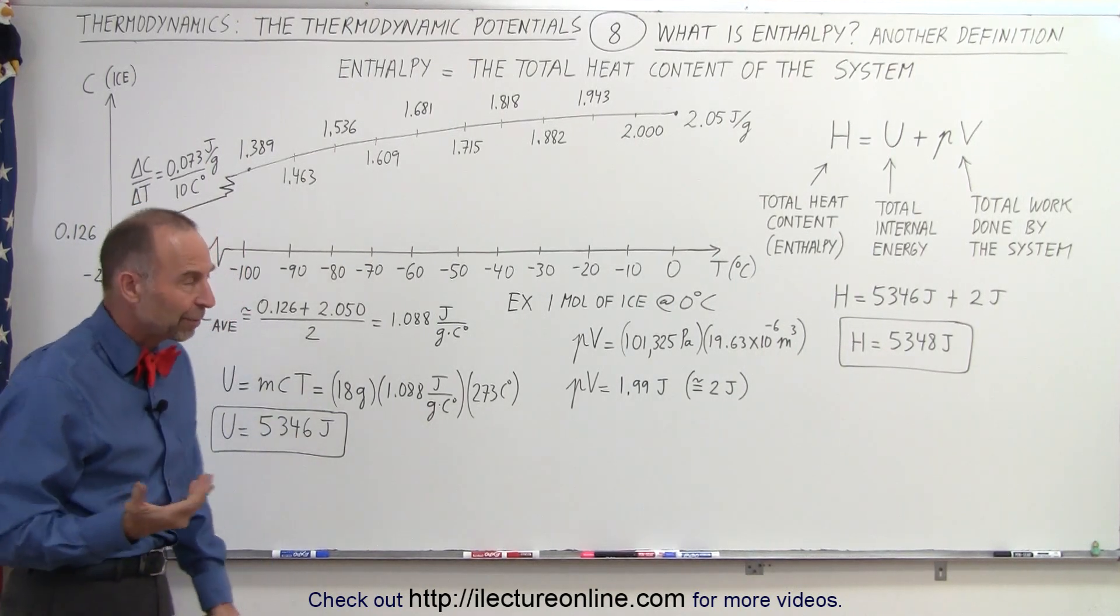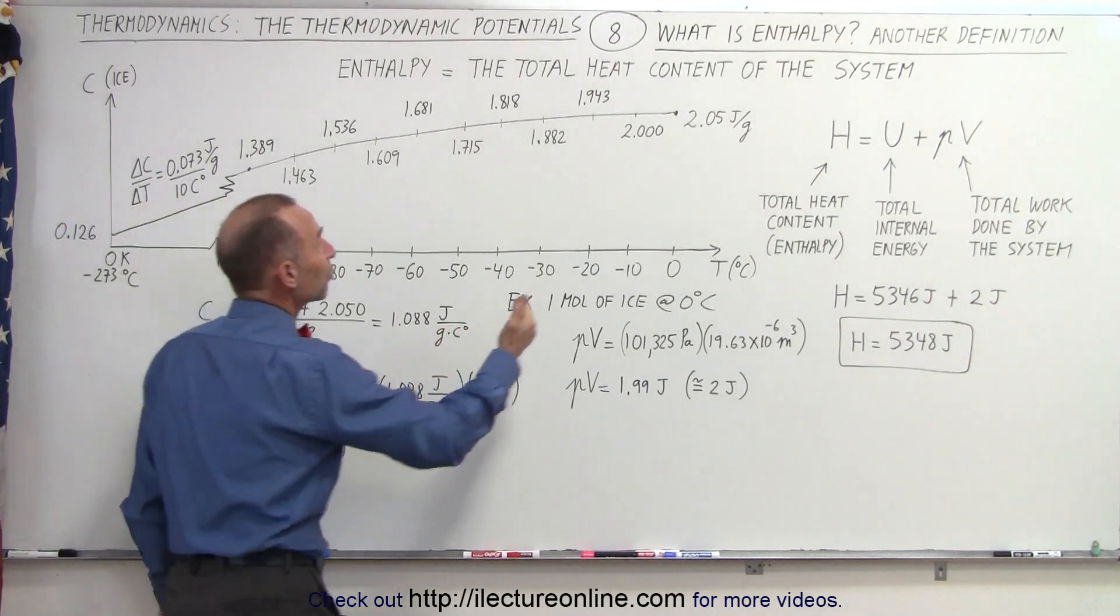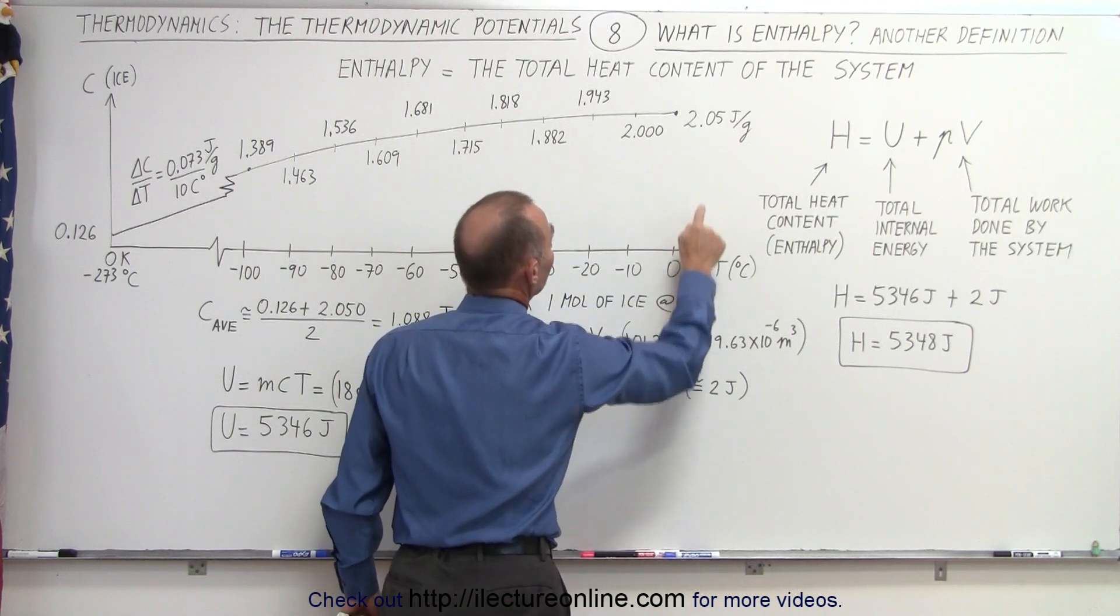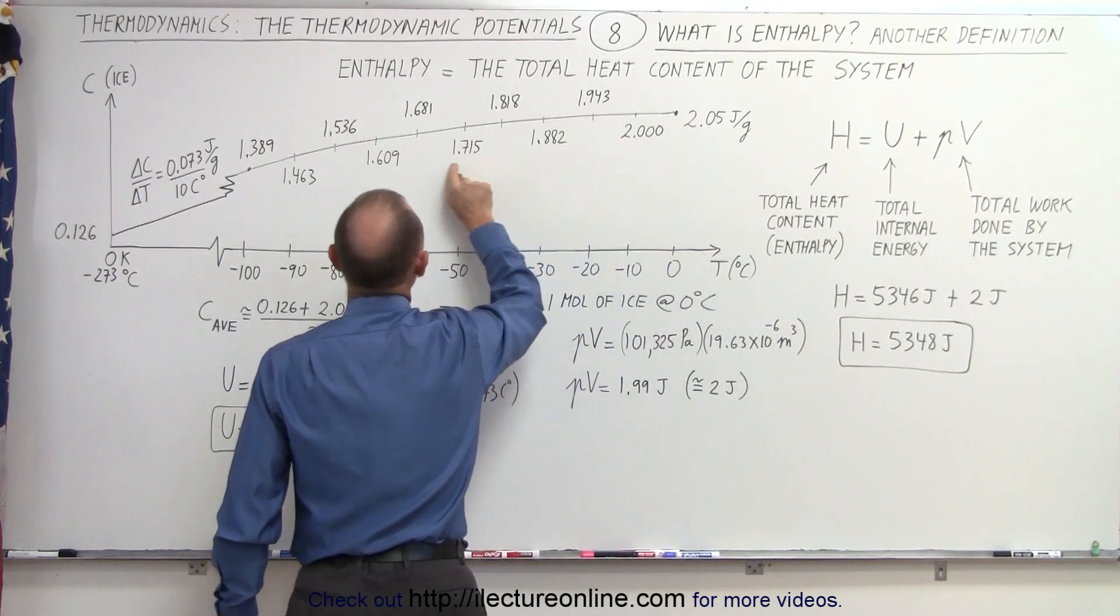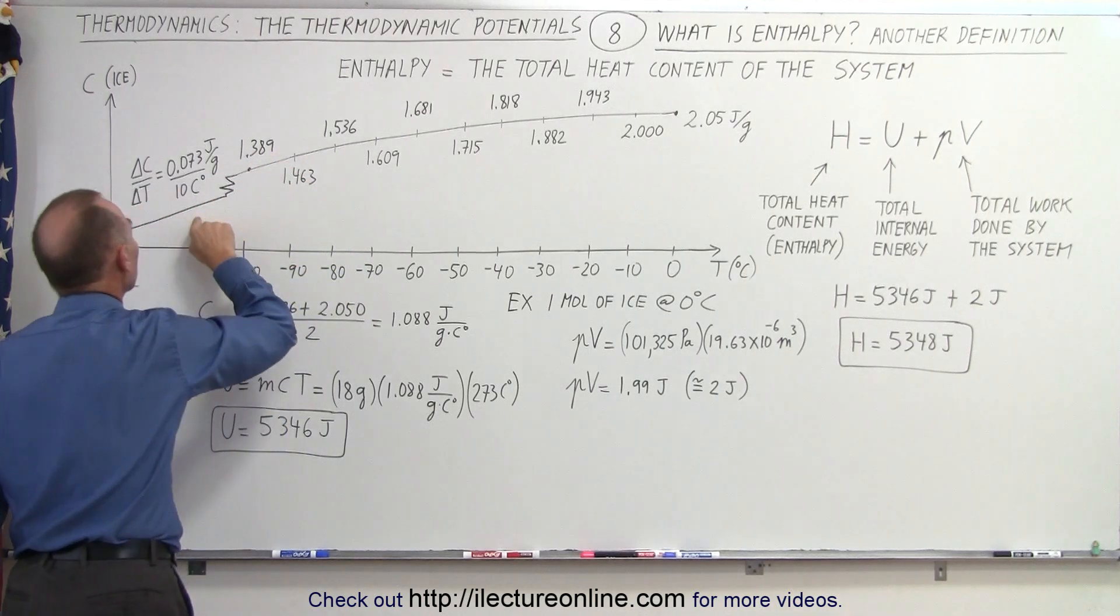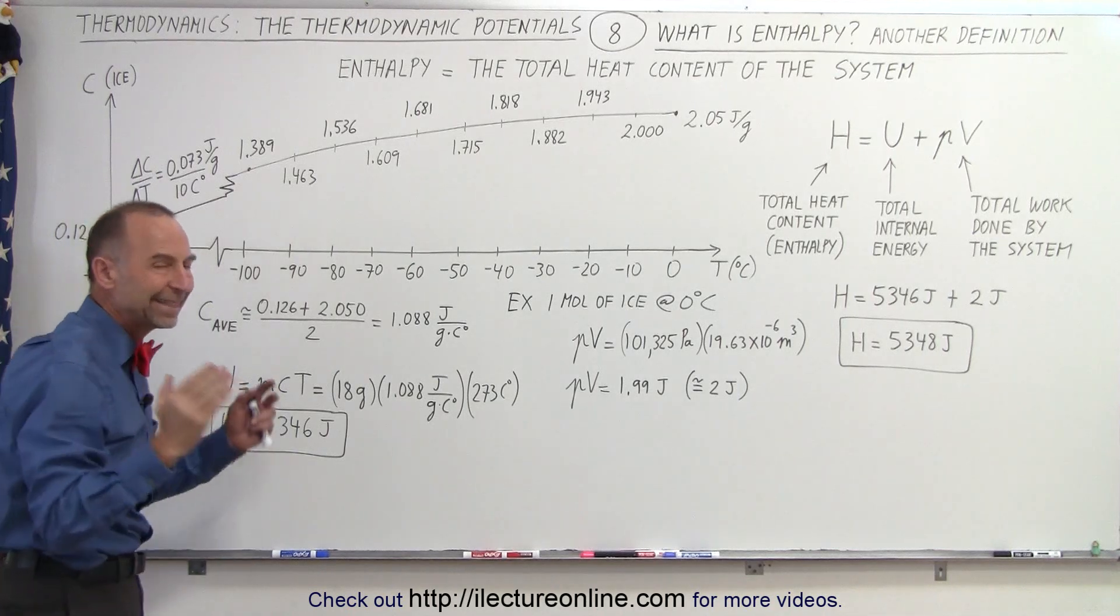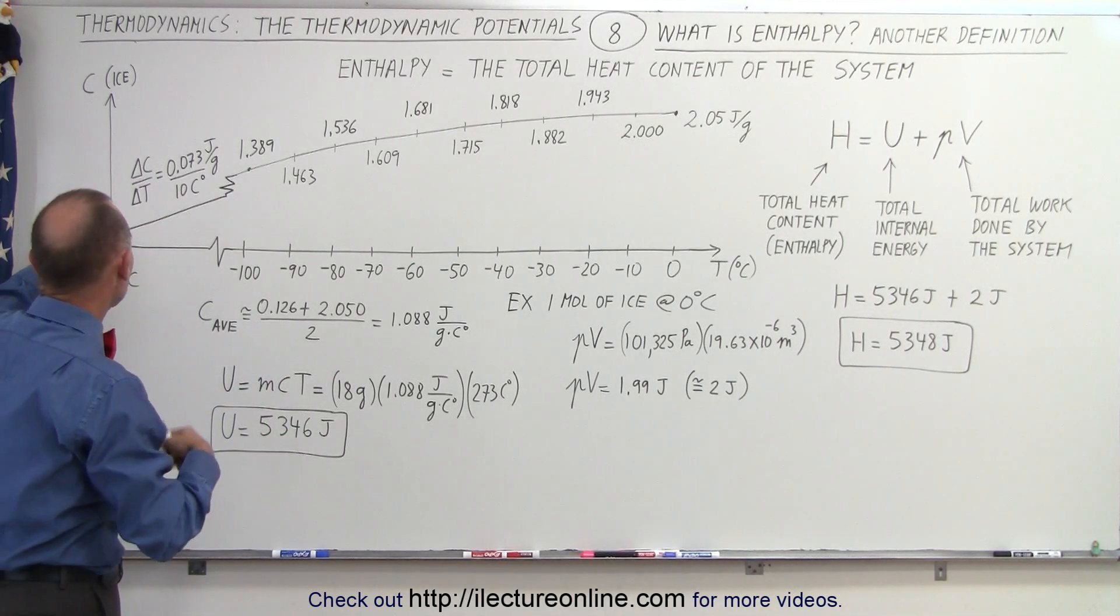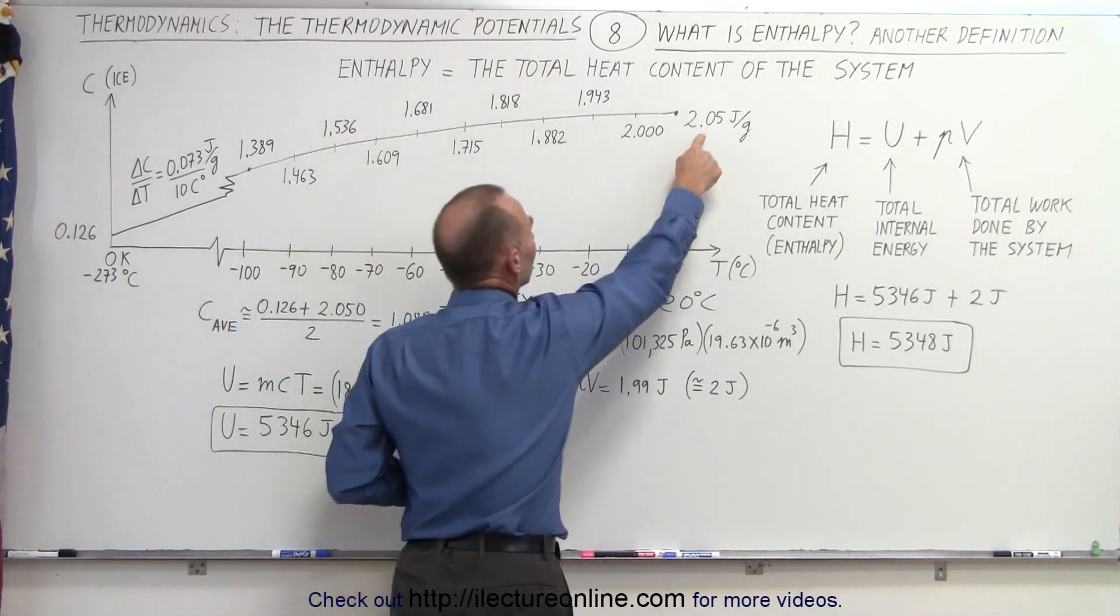Now what's interesting about the specific heat of ice is it is actually not a constant. It changes with temperature. Notice at zero degrees centigrade, the specific heat of ice is about 2.05 joules per gram, but it decreases as the temperature declines. Eventually, it converges to a slope of about 0.073 joules per gram for every 10 centigrade degrees, so that by the end when we get to absolute zero, the specific heat of ice is much lower than it is at zero degrees centigrade.